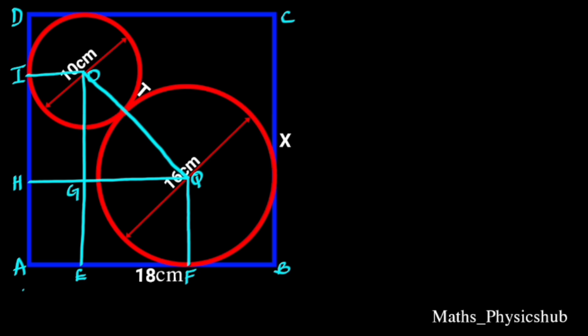From the diagram, notice that AE equals the radius of the small circle, that is 10 over 2 which is 5 cm, and BF equals the radius of the big circle, that is 16 over 2 which is 8 cm. Since AB is 18 cm, EF equals 18 minus 5 plus 8, which equals 5 cm.